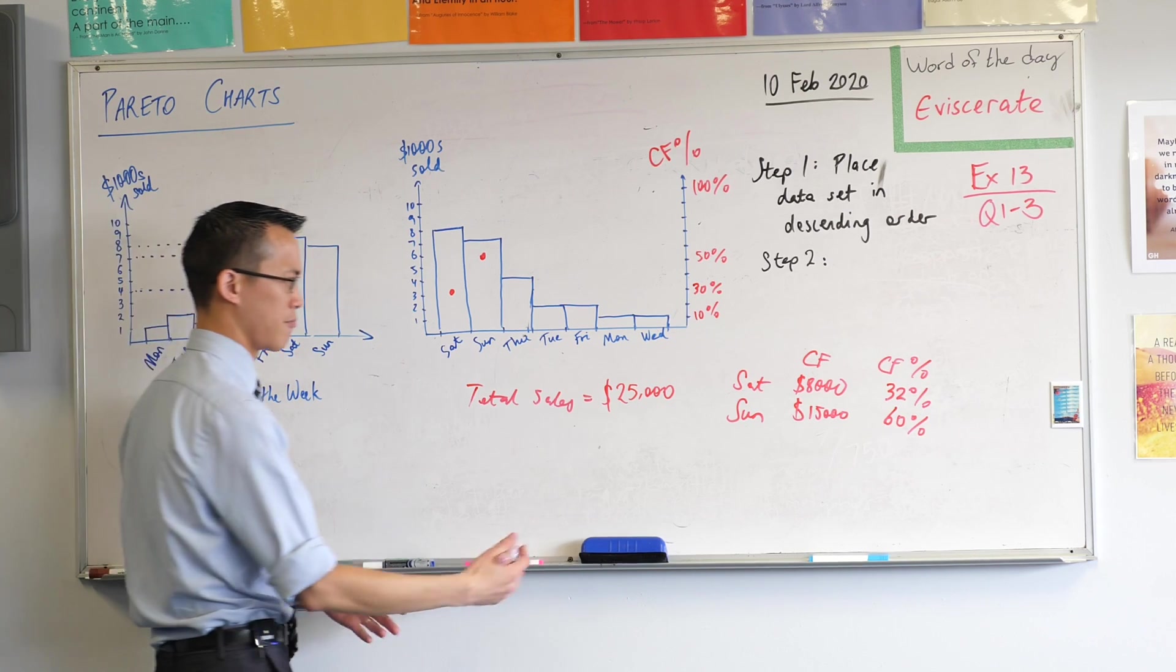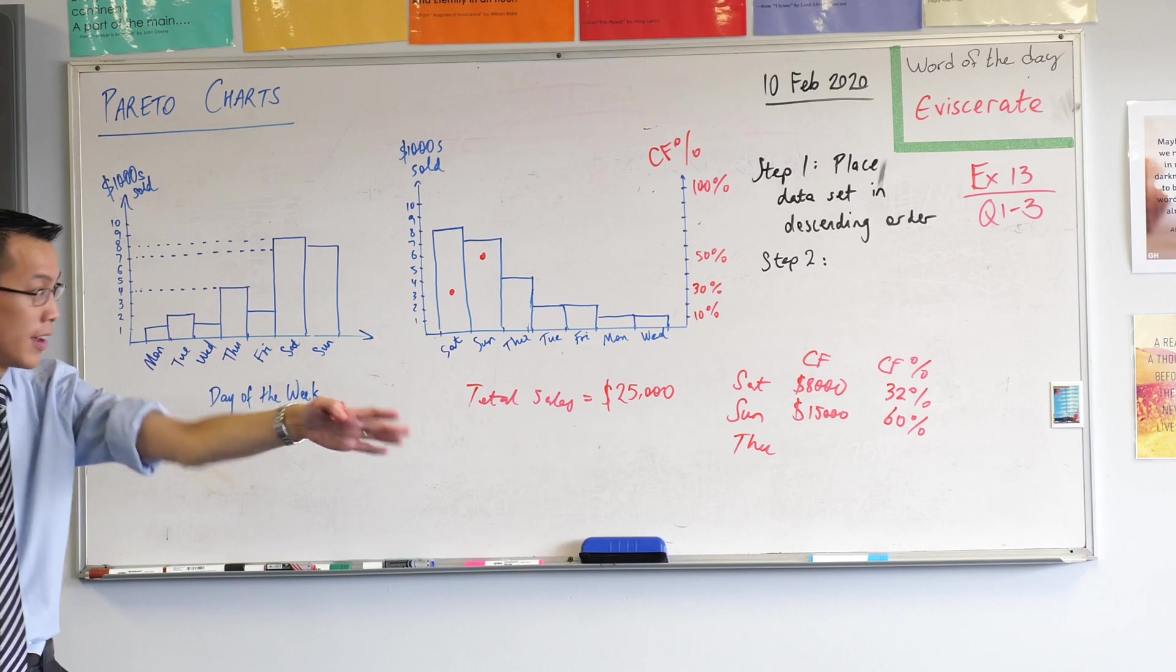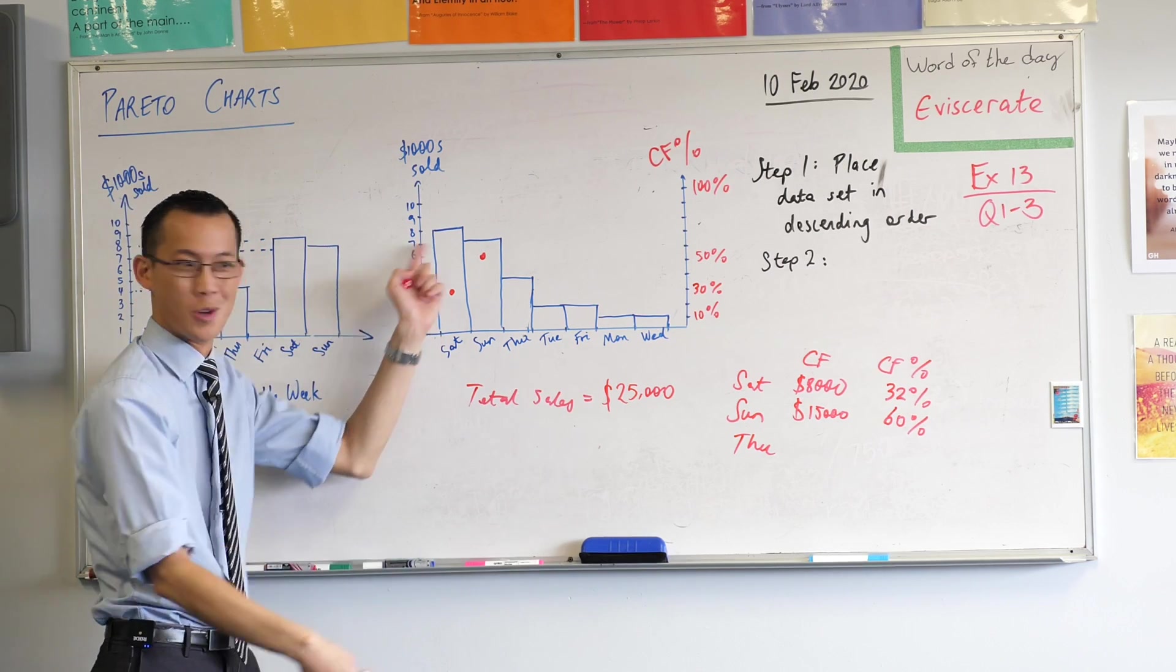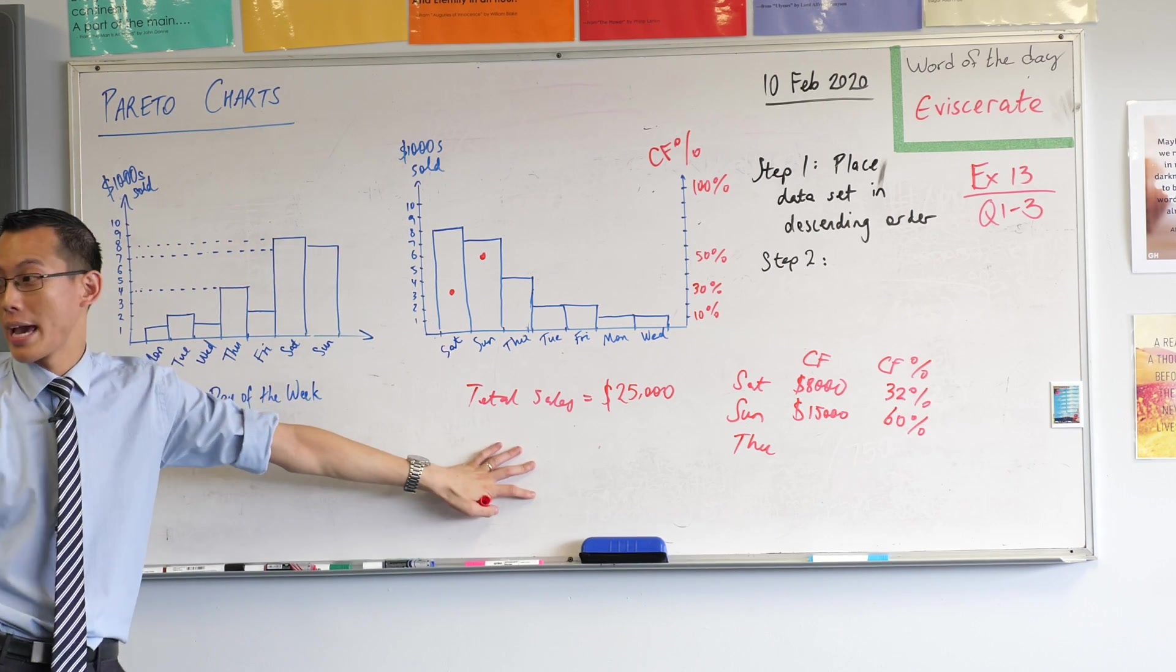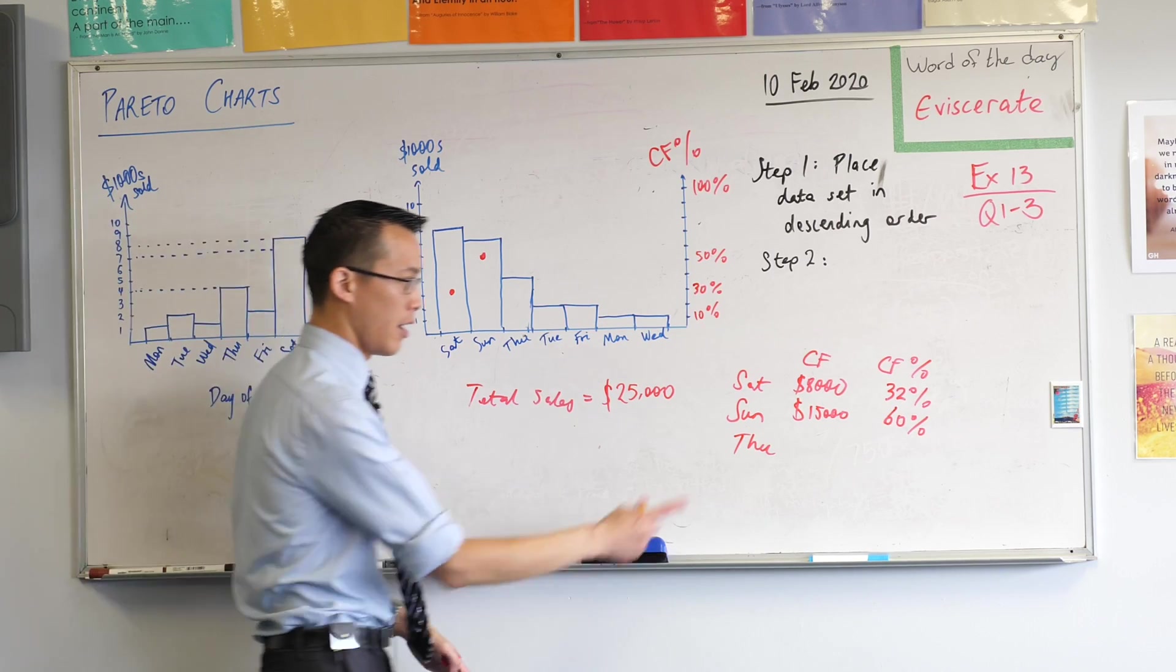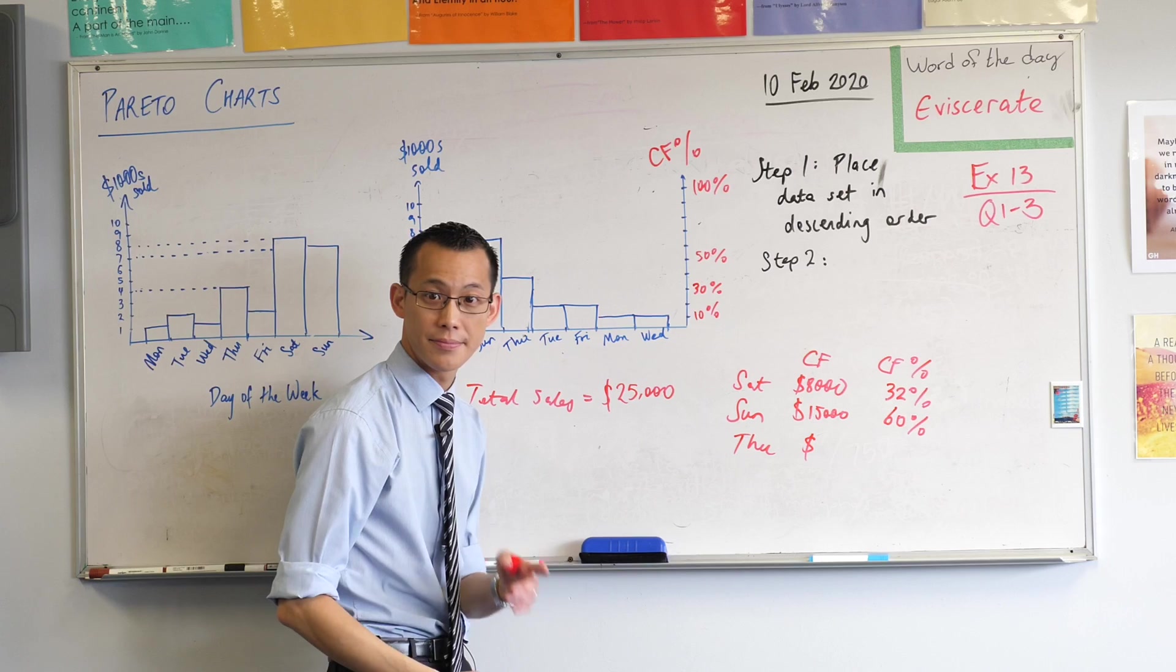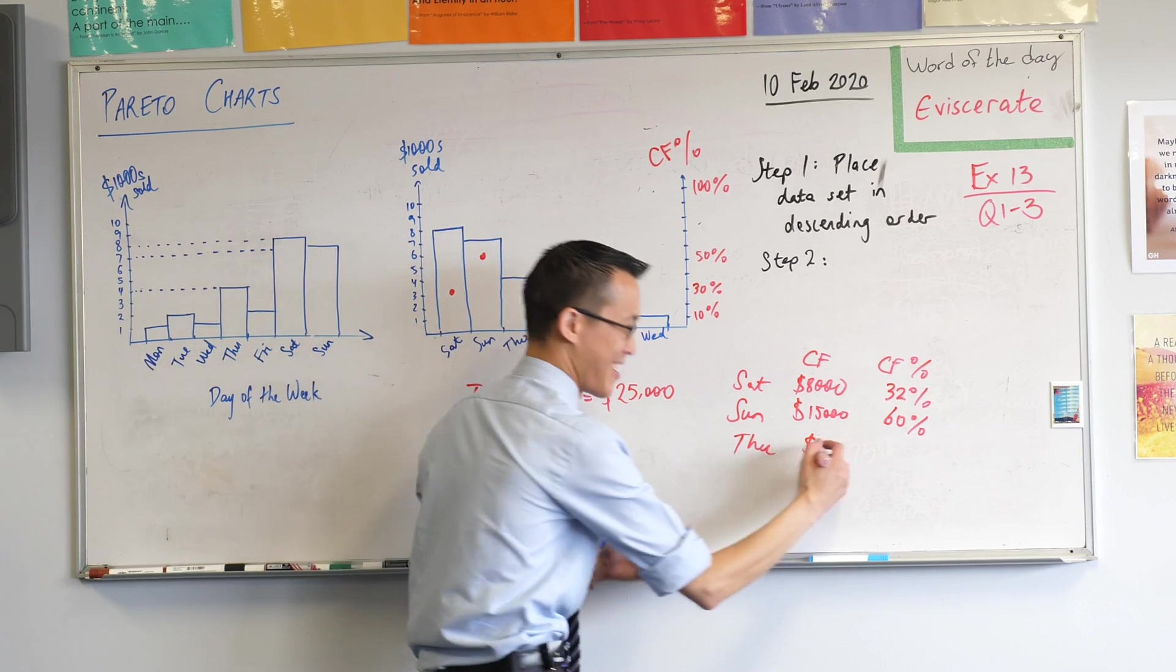You're starting to get the idea now. I think the next one's Thursday. We'll talk about the overall shape once we've got it. Thursday, what are we adding on? It's 4,000. So 15,000 plus 4,000 gives us cumulative frequency of 19,000.